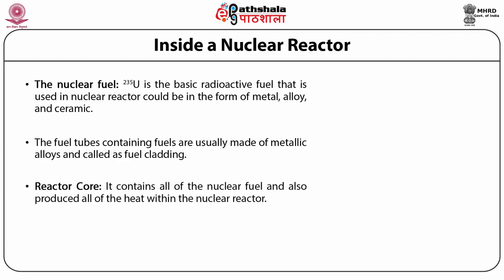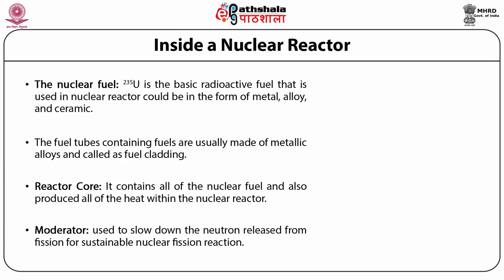Next is reactor core. It contains all of the nuclear fuel and also produces all of the heat within the nuclear reactor. The moderator is a material within the core that is used to slow down the neutrons released from fission for a sustainable nuclear fission reaction. Generally, heavy water and graphite are used as moderator materials.